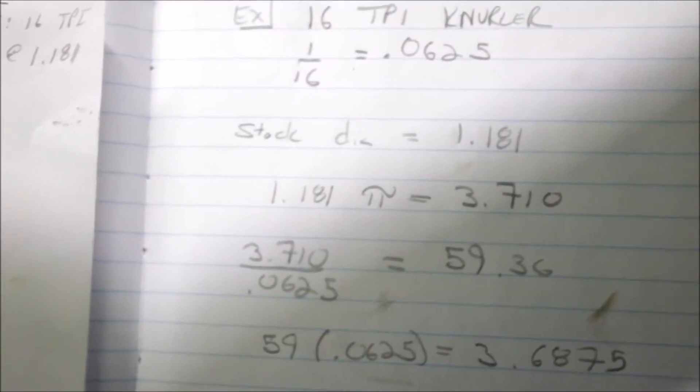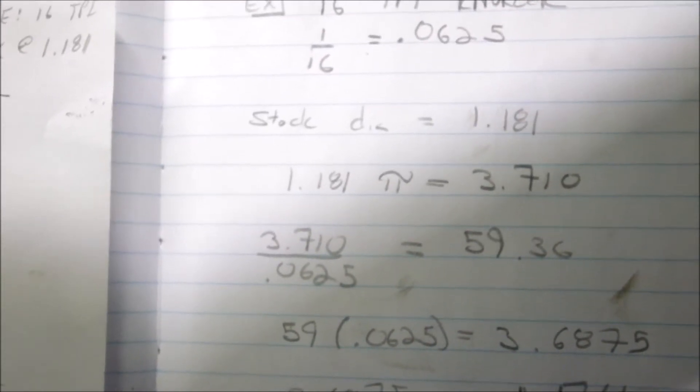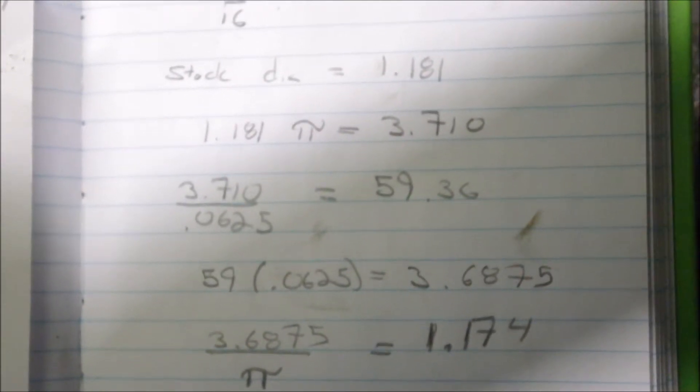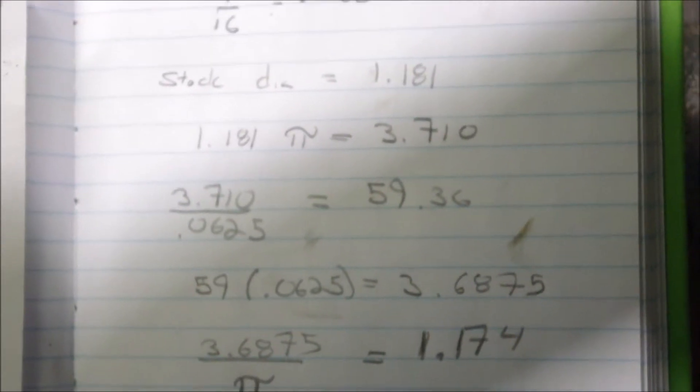Take the diameter of the stock that you're starting with, multiply that by pi. You're working to get the diameter and divide that by the length of your teeth. And you will get a number, and that's how many teeth would go on around that diameter. And most likely you're going to end up with something with a fraction, or 0.36 in my case.